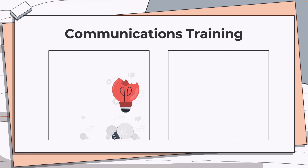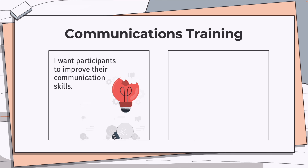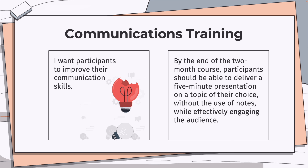Here's another example. Instead of 'I want participants to improve their communication skills,' you might refine it by saying: by the end of the two-month course, participants should be able to deliver a five-minute presentation on a topic of their choosing without the use of notes, while effectively engaging the audience. This paints a much more complete picture, doesn't it?